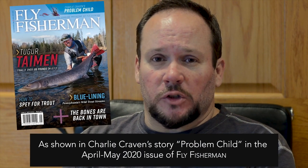Hey everybody, I'm Charlie Craven and I'm back with another super cool fly pattern for you this month. This one's called the Problem Child and it's in the April-May edition of Fly Fisherman Magazine. The coolest thing about this fly is I'm going to show you how to use a great big soft hackle feather to make a much smaller soft hackle fly. This is a really cool technique and I'm really excited about it so let's not waste any more time. Let's go tie.